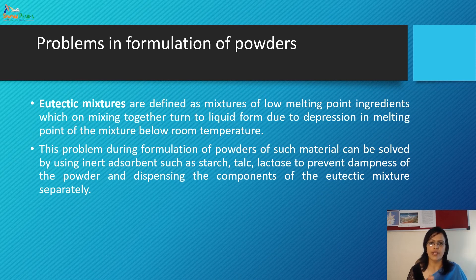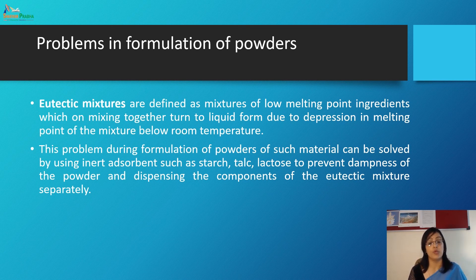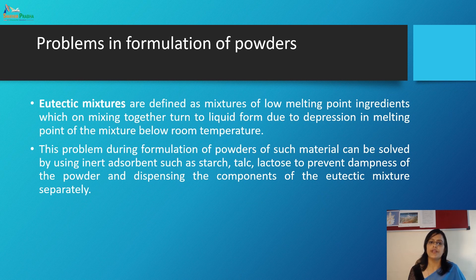One more point: eutectic mixtures. These are mixtures of low melting point ingredients which, on mixing together, turn into liquid form due to depression of the melting point of the mixture below room temperature. This problem during formulation of powder is resolved by using inert absorbent materials such as starch, talc, and lactose to prevent dampness, and by dispensing the components of the eutectic mixture separately.